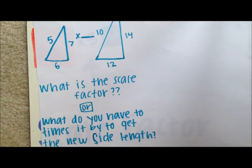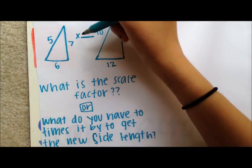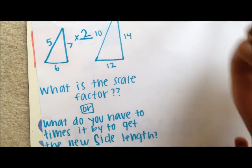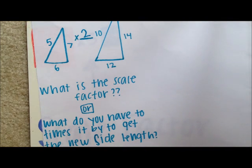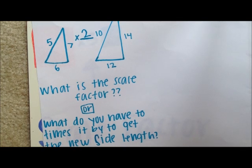This one is pretty easy since we all should know that 5 times 2 is 10. 7 times 2 is 14, and 6 times 2 is 12.